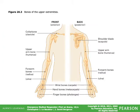Figure 20.3 shows the bones of the upper extremities. The image on the left-hand side is the front or anterior portion of the body; the image on the right is a view from the back or posterior.